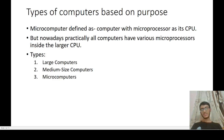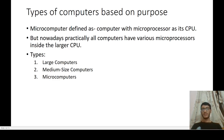A computer is a programmable machine. A programmable machine consists of mainly four components: CPU, memory, input/output devices, or peripherals. The CPU contains an ALU, control unit, and registers. Together, a CPU on a single chip is called a microprocessor.